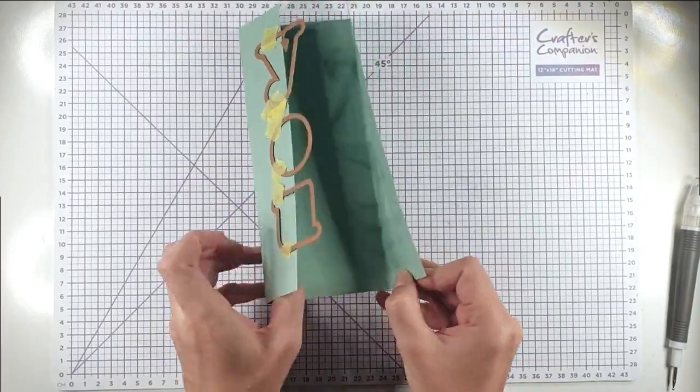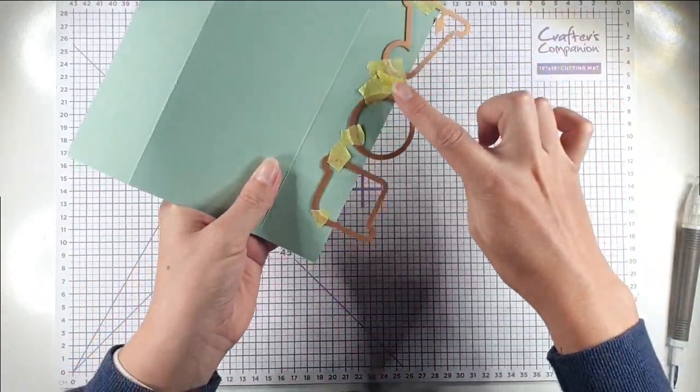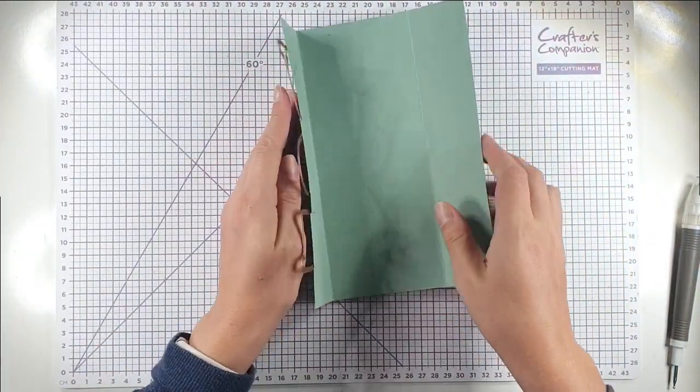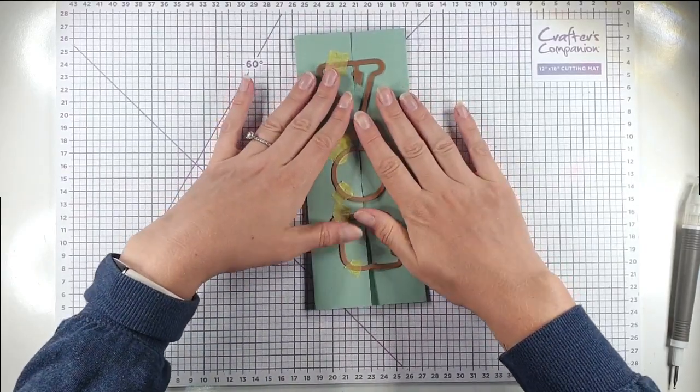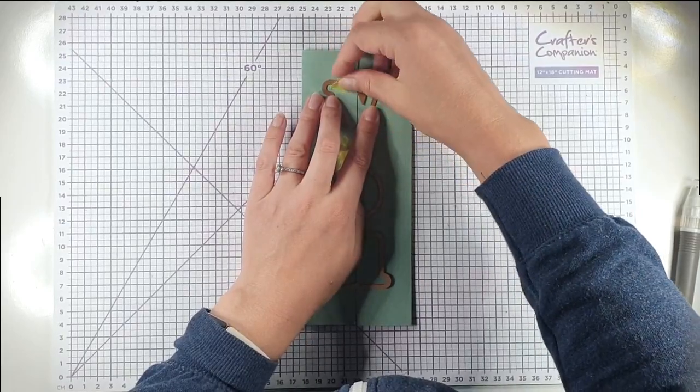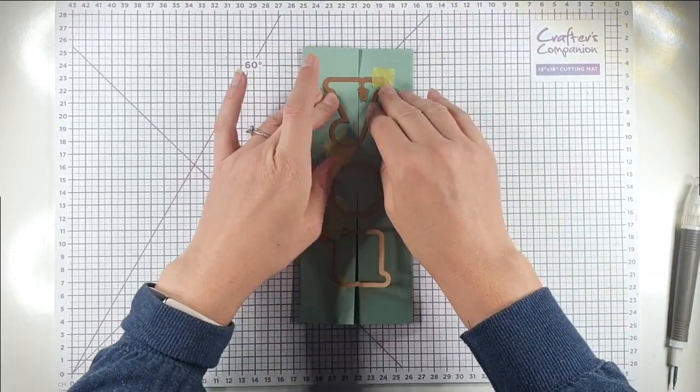Then what I'm going to do is I'm going to open this up and I'm going to die cut it like this so that only this half of the dies are going to cut. Then I'm going to leave the dies on there, I'm going to close these over, and then keeping them in place, I'm just going to move the tape over to the other side of the die so that we're taping it on the other side.